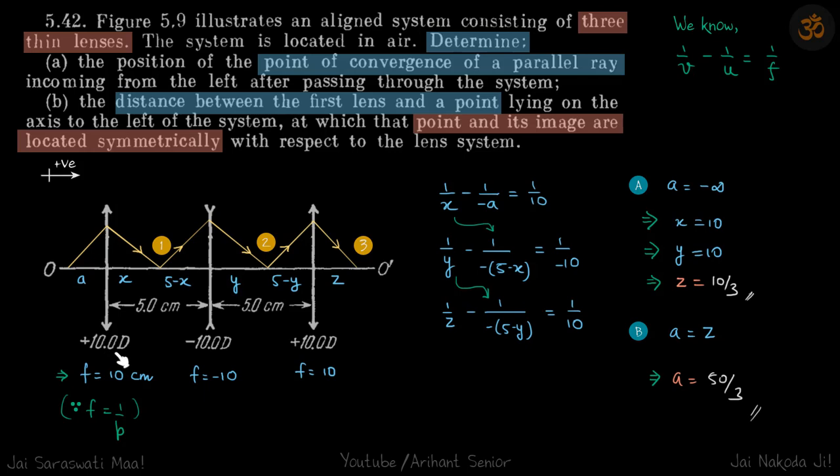Power of the lenses is given so we'll first find the focal length of the lenses. So focal length is 1 upon power, power is in SI units. So if we convert that into centimeter we get f is equal to 10 centimeter. So focal length of this is minus 10 and again plus 10.